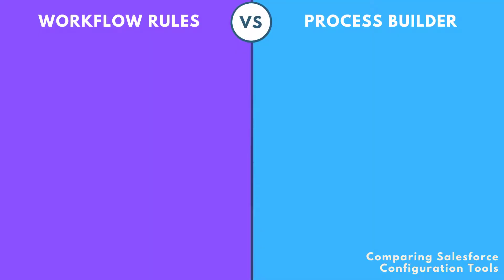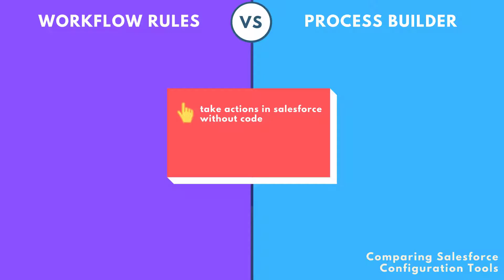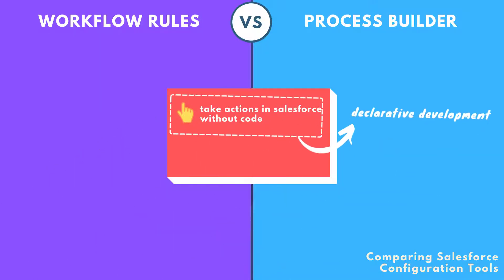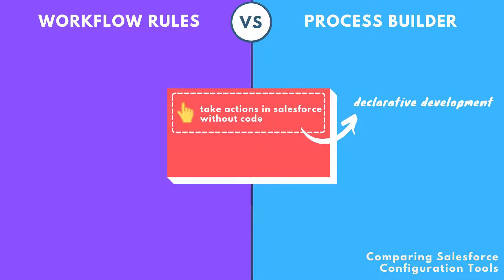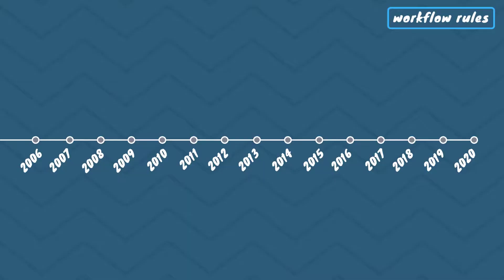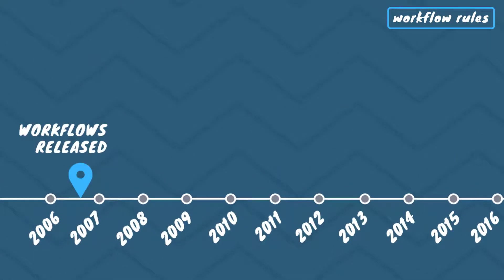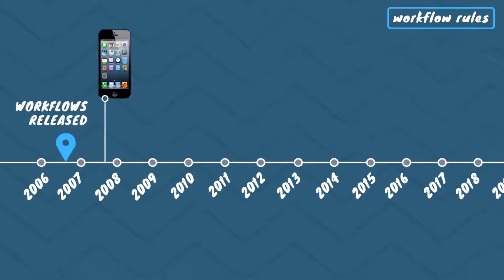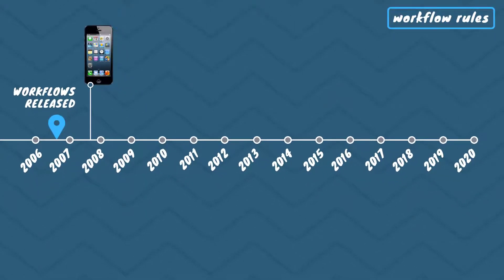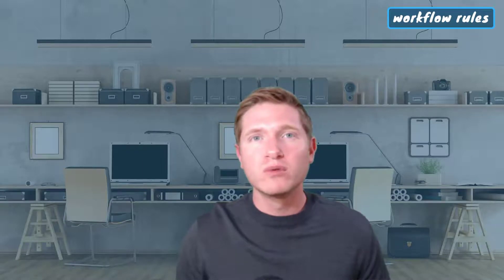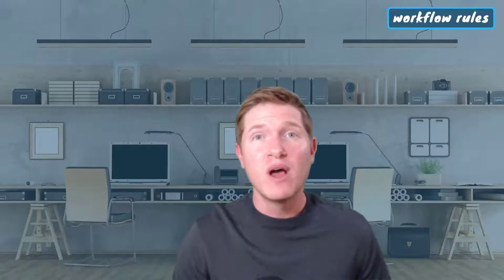Workflow rules and process builder are very similar in that they allow you to automatically take actions within Salesforce without the need for code. This is many times called declarative development. Workflow rules have been an admin's best friend for a long time. They were introduced in the winter 06 release — and to give some context, the first iPhones weren't released until 2007 — so workflow rules have been around for a while and are a powerful tool for admins in their own right.